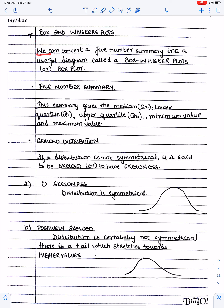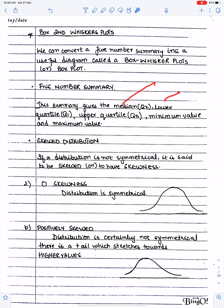We can convert a five number summary into a useful diagram called a box plot, or box whisker plot. The five number summary consists of the median, the lower quartile Q1, the upper quartile Q3, the minimum value, and the maximum value.